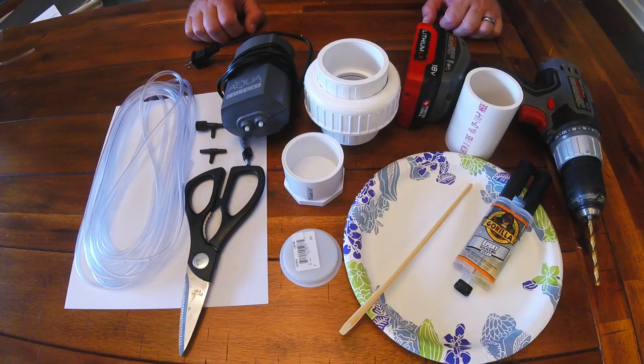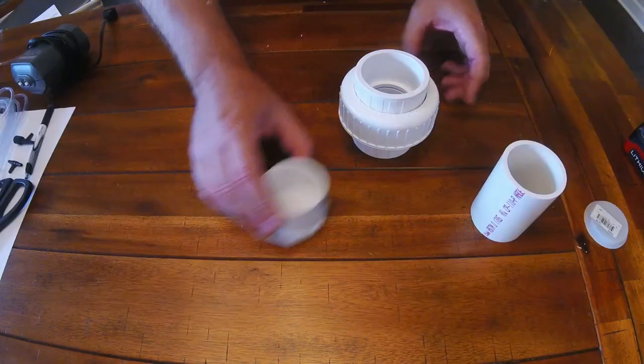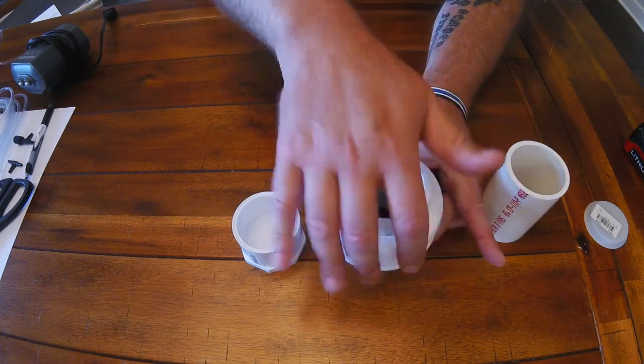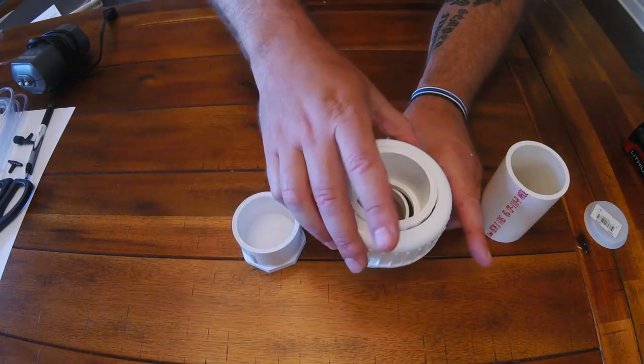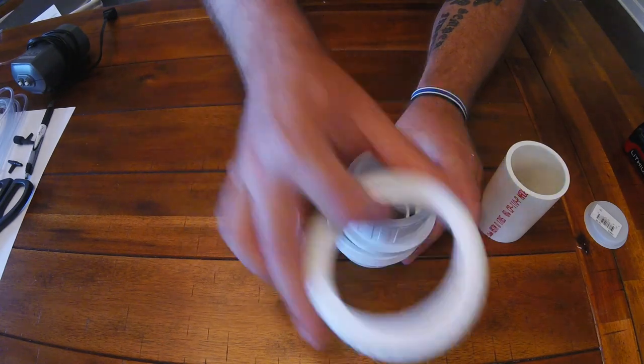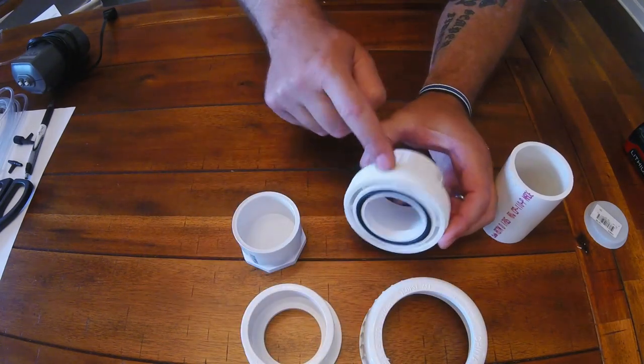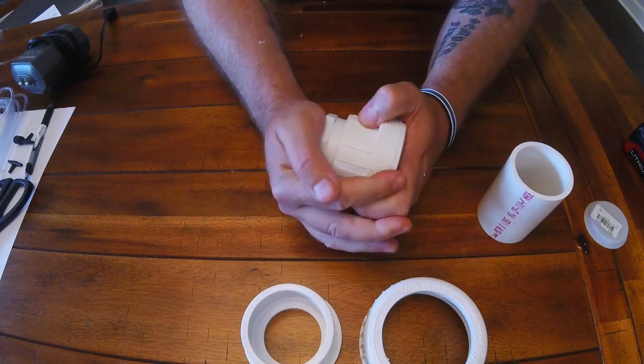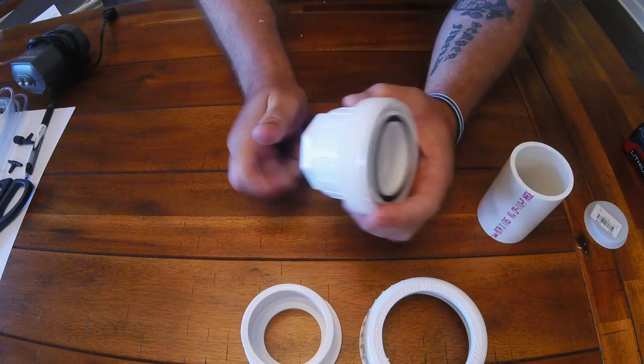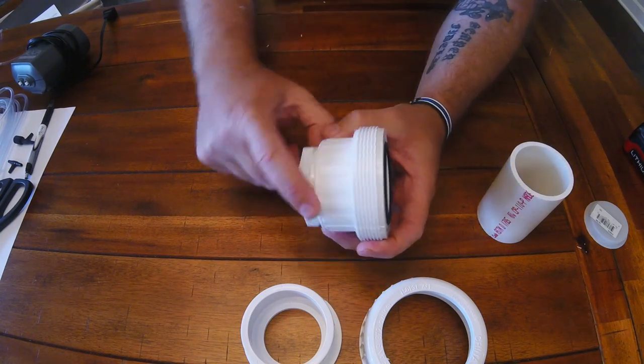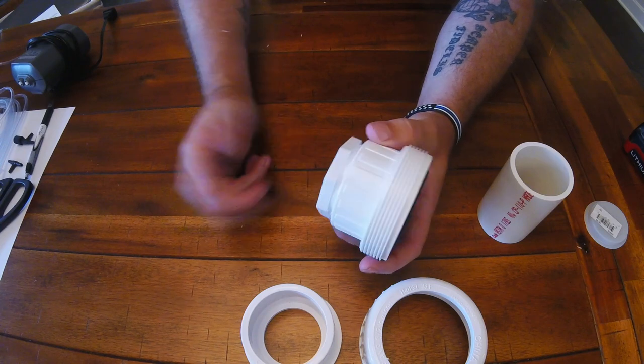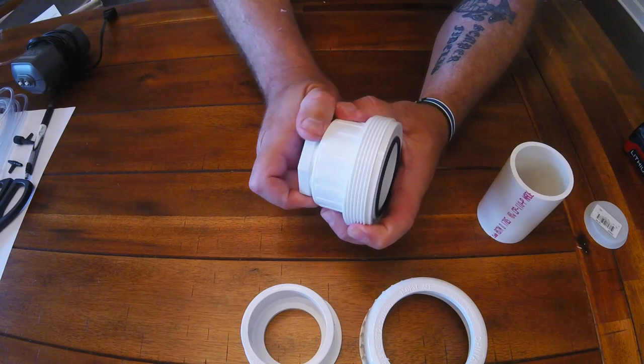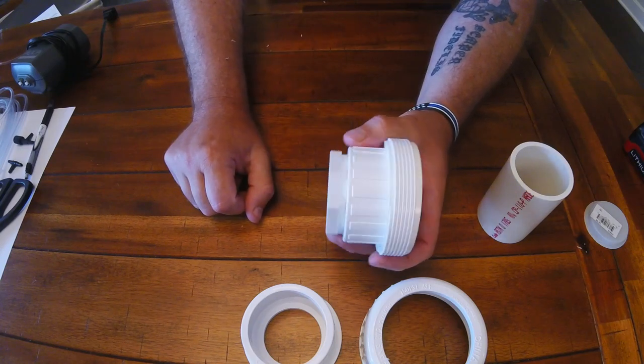So the first thing we're going to focus on is making the bottom. You want the threaded part of the solvent union to be your bottom. Take your plug and just give it a good press. It doesn't have to be overly tight. You could glue all this if you wanted, but it's not really necessary. It's low pressure, it's not going to blow apart on you. So there's your bottom piece done.